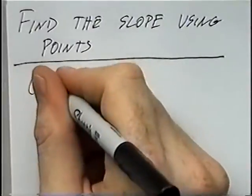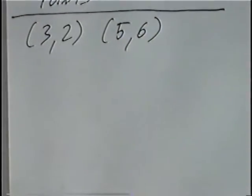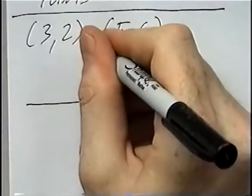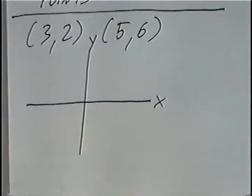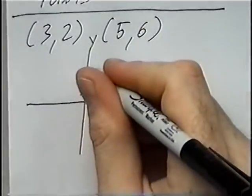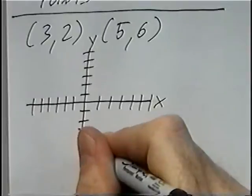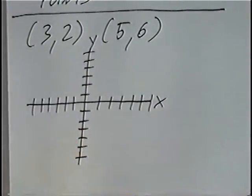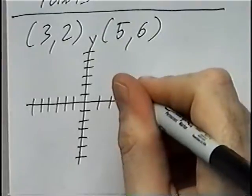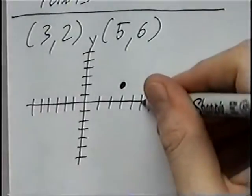The first two points are three comma two and five comma six. Graphing these two points, we can draw the x-y axis. The biggest number we have is six, so we can go six spots in each direction. The first point is three, two — x is positive three, y is positive two. The second point five, six — x is positive five, y is positive six.